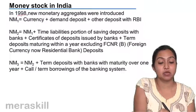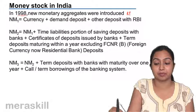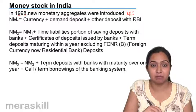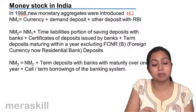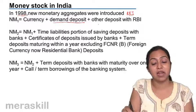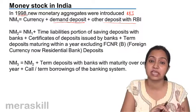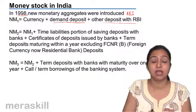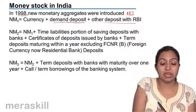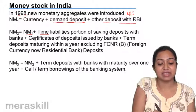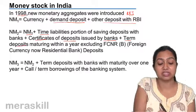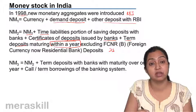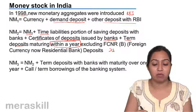In 1998, new money aggregates were introduced by RBI: NM1, NM2, and NM3. Like M1, NM1 is narrow money — currency with the public plus demand deposits plus other deposits with the RBI, including cash reserves that commercial banks keep with RBI. When in NM1 you add certificates of deposits issued by banks plus term deposits that mature within less than a year, it becomes NM2.